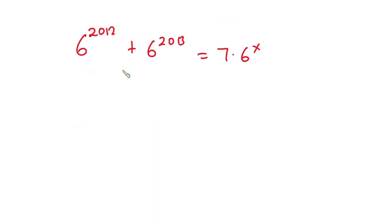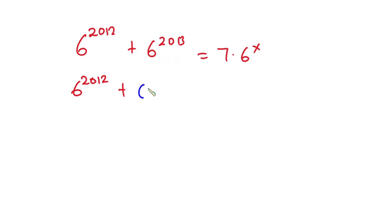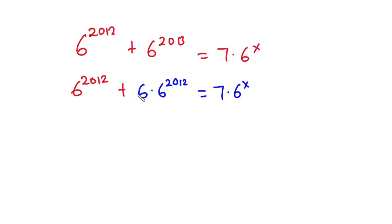Now let's simplify this. We have 6 to the power 2012 plus — now 6 to the power 2013 can also be written as 6 times 6 to the power 2012. This is equal to 7 times 6 to the power x.